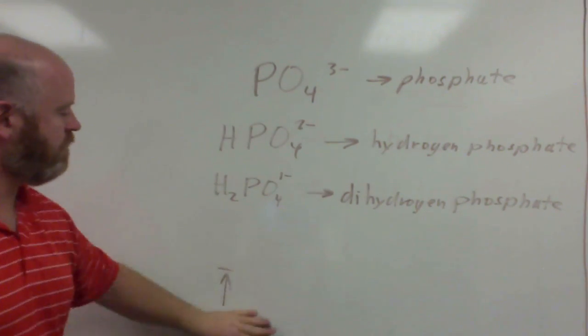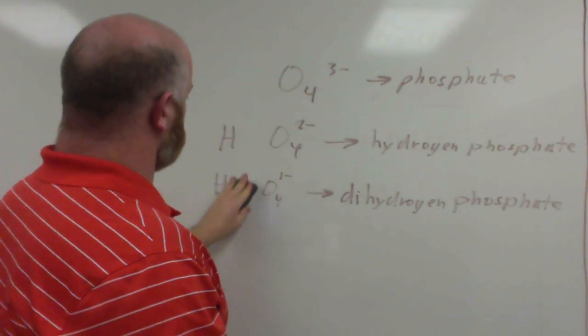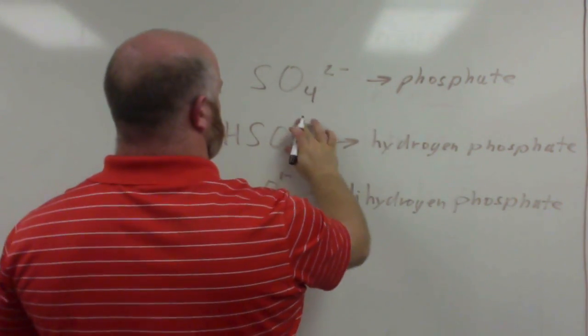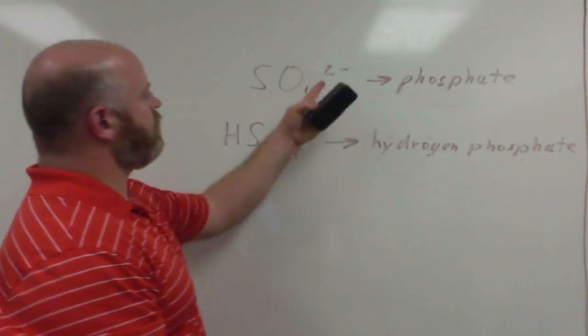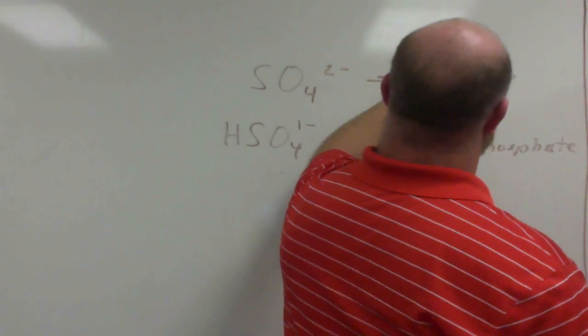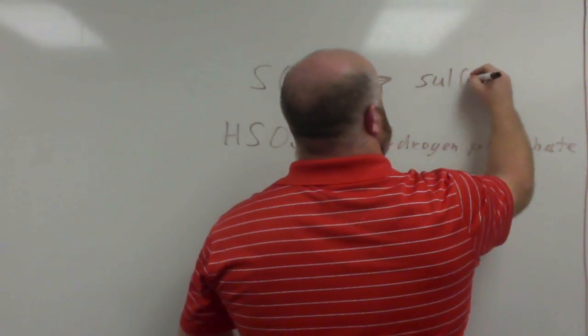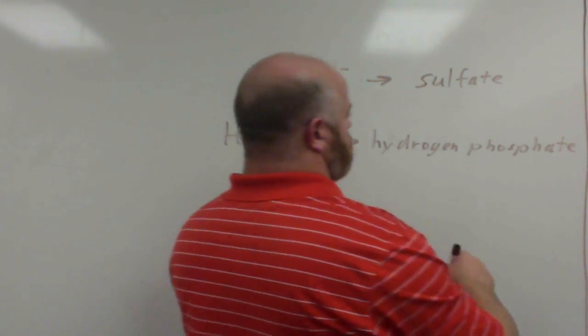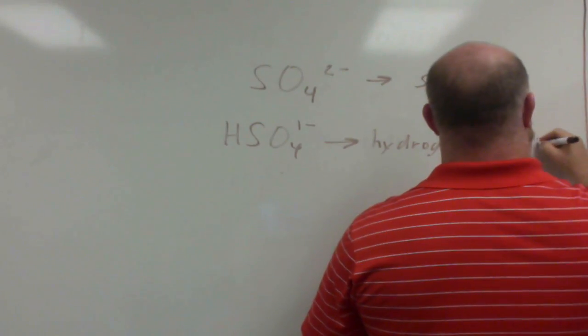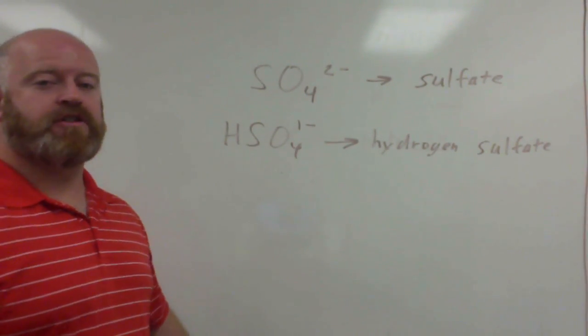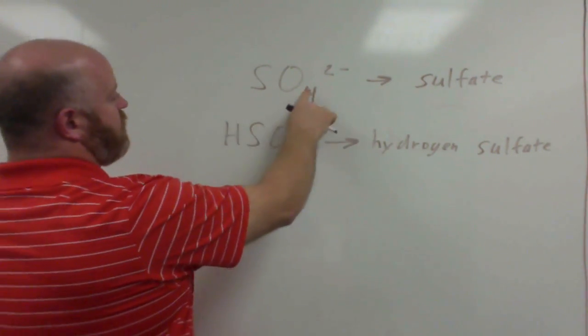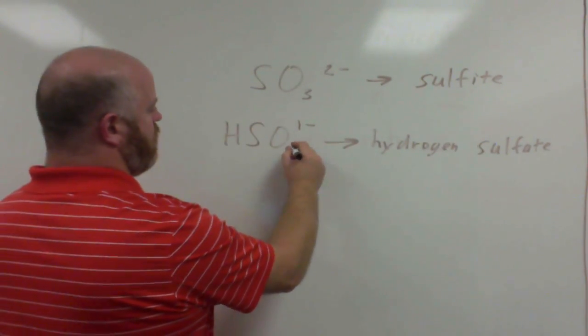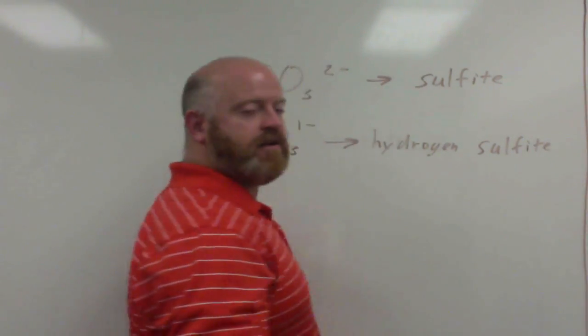The same thing can happen with your sulfates. But sulfate starts with a negative two charge. So it can only add one hydrogen to it for a negative one charge. We call that hydrogen sulfate. And of course, all this stuff can be done with your ites also. So if you had SO4, if you had SO3, you now have sulfite. HSO3 would be hydrogen sulfite.